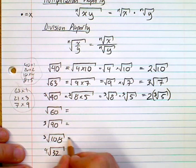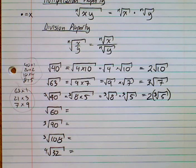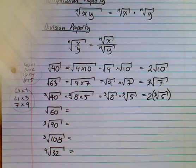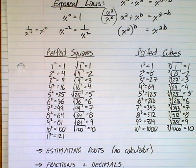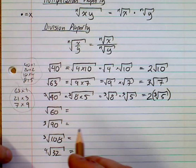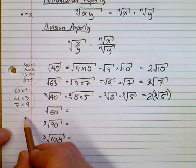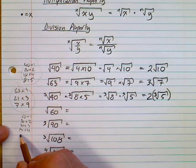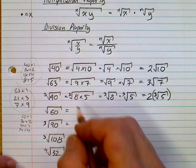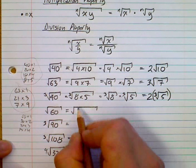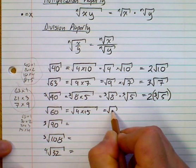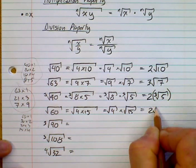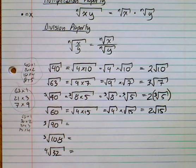For the square root of 60: look at your list of perfect squares. The factors of 60 include 30×2, 20×3, and 15×4. The 4 is a perfect square, so it's the square root of 4 times 15, which equals the square root of 4 times the square root of 15, giving 2 root 15.